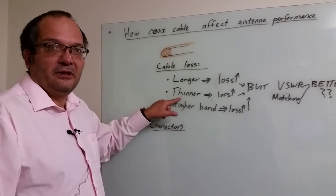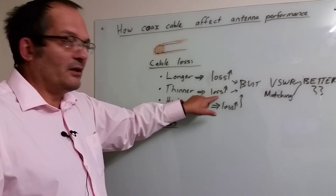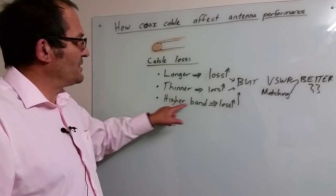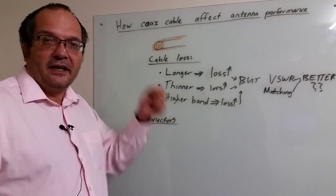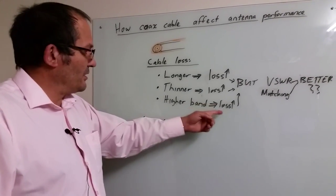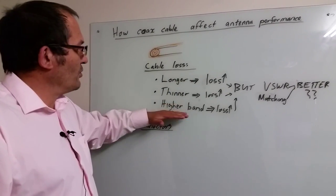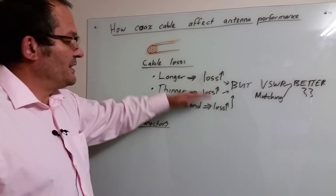A thinner cable, typically also a cheaper cable, has higher loss per fixed length. What many people don't realize is if you use a higher band - in other words, if you go from 900 to 1800 band - the loss goes up. At higher frequencies you have to be more and more careful because all these things contribute to loss.